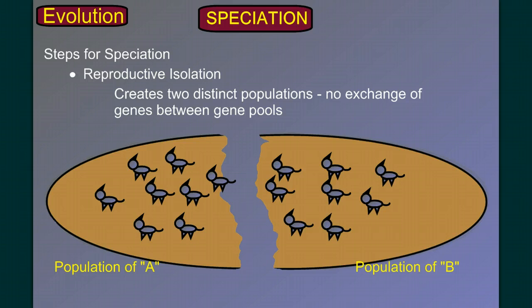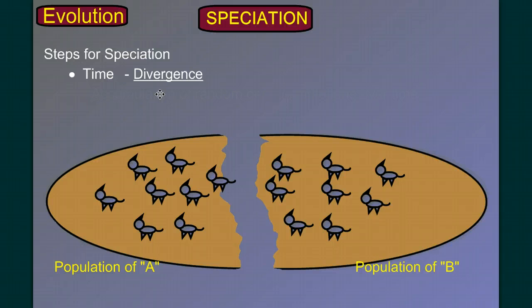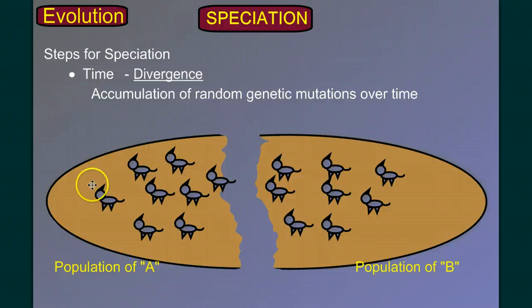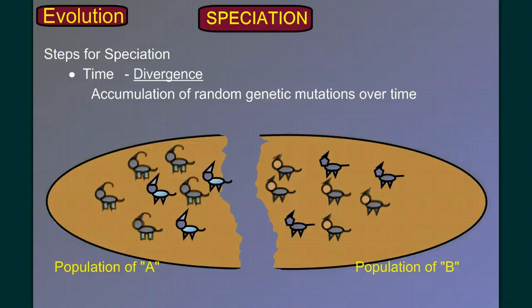In our recipe for speciation, the next ingredient is time. If we wait, we get a phenomenon called divergence. Population A and population B are going to diverge from each other genetically — there will be an accumulation of random genetic mutations over time. Mutations happen in population A, mutations happen in population B, and since they're random, they're probably not going to be the same. So over time, these two populations start to look differently, and the makeup of the gene pool changes. As more time passes, we get more genetic mutations and more differences between the two populations.